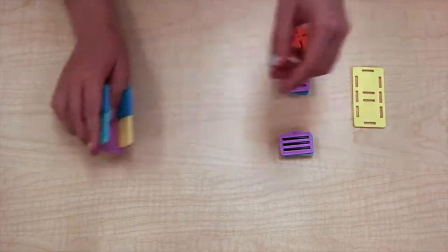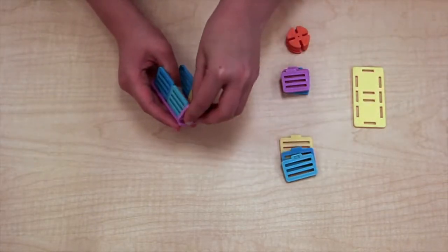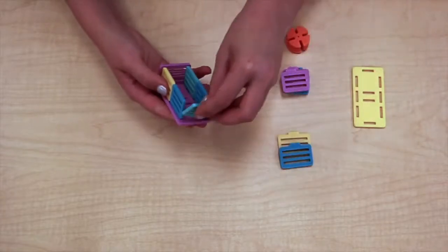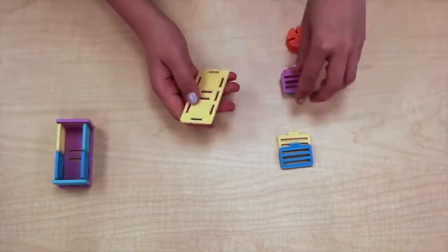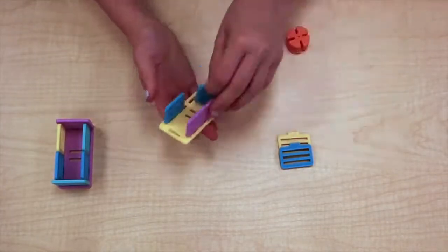Once you're done with that, take the piece with the tab towards the middle and snap it on the edges of the rectangular piece. Build another box-like structure exactly like this one.